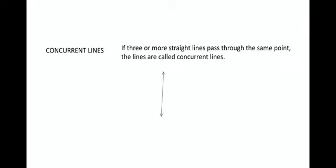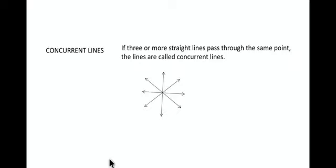Next, concurrent lines. If three or more straight lines pass through the same point, then the lines are called concurrent lines. For example, there is a line, and another line which intersects at that point, and again another line which intersects at the same point, and another line. When more than three straight lines pass through the same point, all these lines are called concurrent lines.